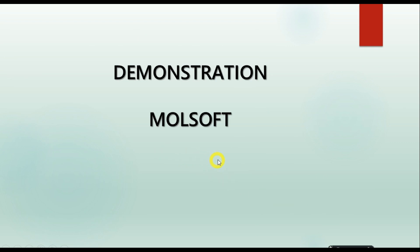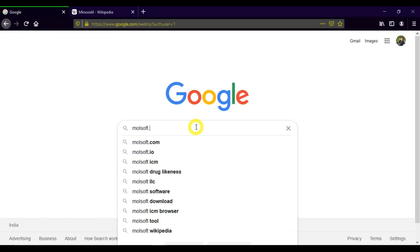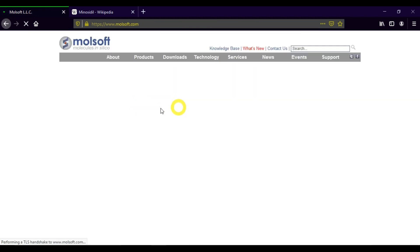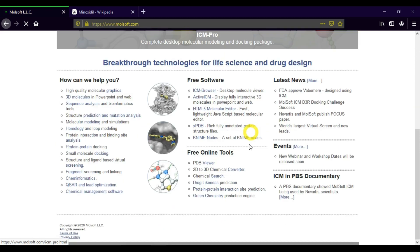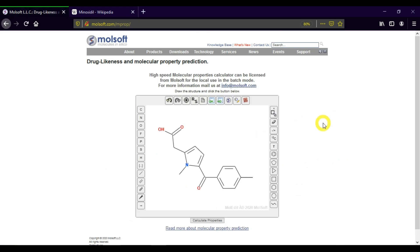Let's see how to work with Molsoft to analyze the drug properties. Go to your web browser and type molsoft.com. This is the official page of Molsoft. Now go to the free online tools and select drug likeness prediction. The drug displayed is by default. You can clear this by clicking this icon.